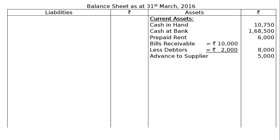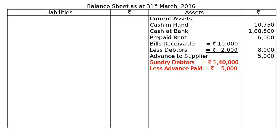Bills receivable final value: rupees 8,000. Next, advance to suppliers rupees 5,000. Sundry debtors rupees 1,40,000. Less advance paid rupees 5,000 — per adjustment part E, an advance of rupees 5,000 to a supplier was wrongly included in the list of sundry debtors. It will be deducted from debtors and added to creditors. Less advance paid rupees 5,000. Add bills receivable dishonoured, which was discounted — deducted from bills receivable and added to debtors. This gives rupees 1,37,000.